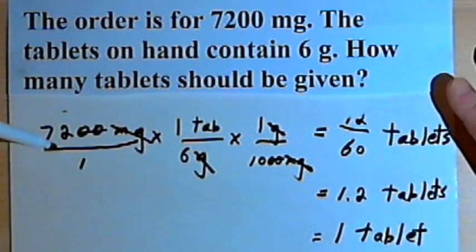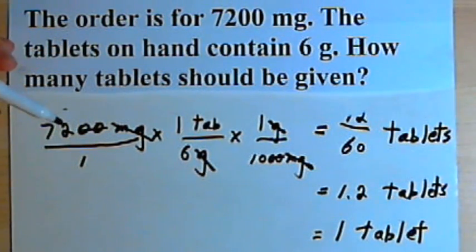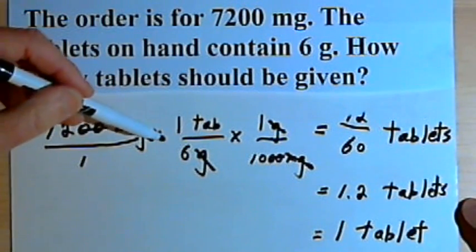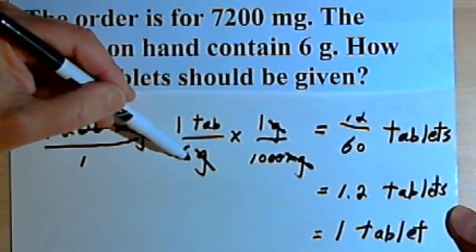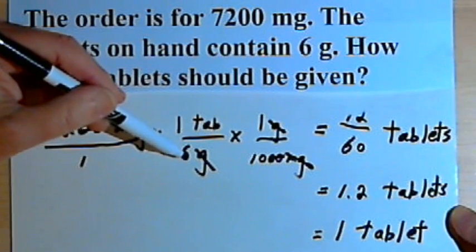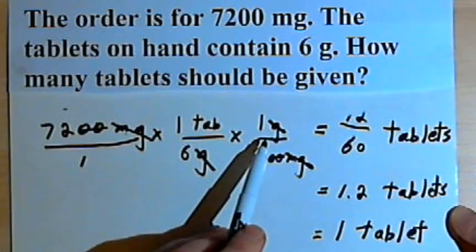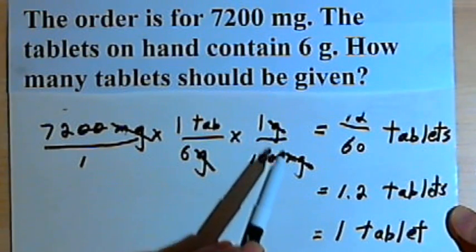So just to review this before we go on to the second one, I set this up like a basic problem. I started out with the ordered amount, multiplied that by a fraction 1 tab over 6 grams, because a tab would contain 6 grams. And then since I had different units, milligrams and grams, I wrote another fraction which would allow me to convert between grams and milligrams.